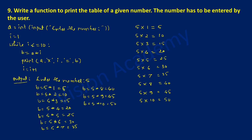Once the condition is false the control comes out of this iterative statement and it is going to display the output. So it has printed the table of 5. Now it's time to go for executing this program. Let us execute and check out the result.